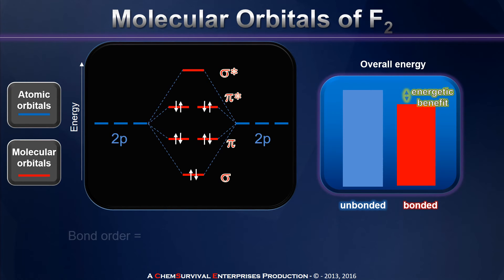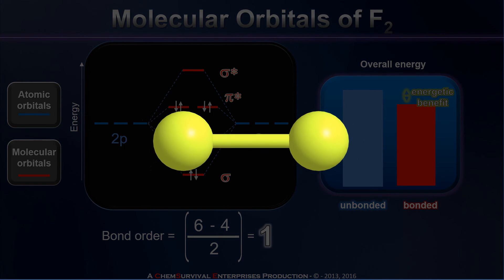And our calculation for bond order lets us know that when you have a grand total of six bonding electrons and a total of four antibonding electrons, you would expect that species to form a single bond. And in fact, when we study fluorine in the laboratory, that's exactly what we find, a molecule with a single bond.